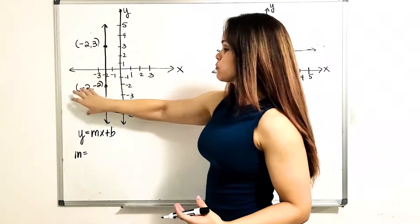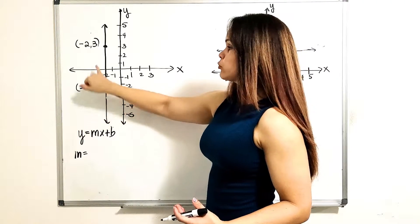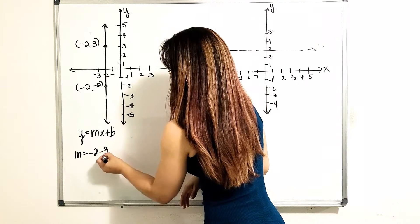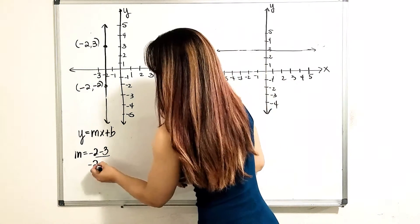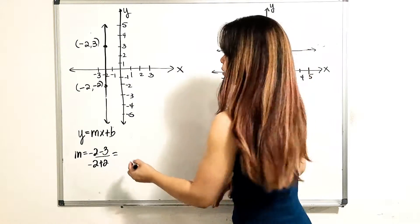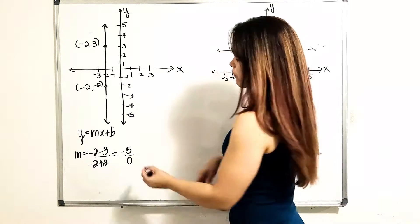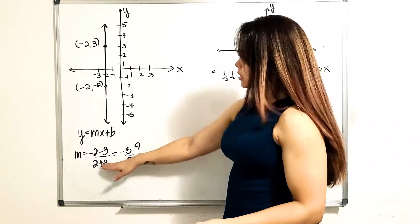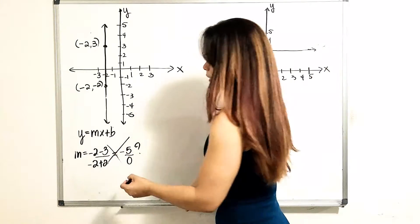So if I choose this point as the first and this as the second, I'm going to have negative 2 minus 3, and negative 2 minus negative 2, which is the same as negative 2 plus 2. If I simplify, this is going to be negative 5 over 0, and we have a problem here, because this is not defined. And this is characteristic of a vertical line — we don't have a slope. The slope is undefined.